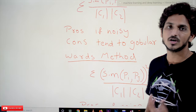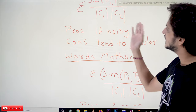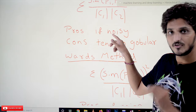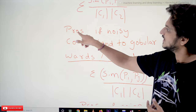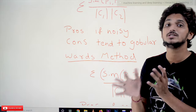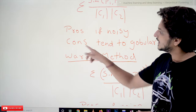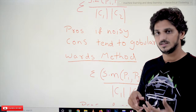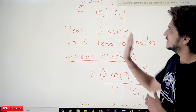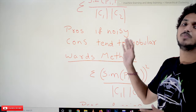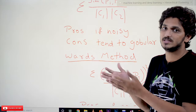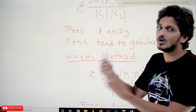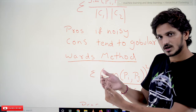The pros of group average linkage: it is good for noisy data points, the same way maximum linkage is. If you are having noise between the clusters it works well. The cons: it tends towards globular shapes, the same way maximum linkage does. However, group average is a trade-off between minimum and maximum — it is not as strongly tending toward globular shapes as maximum, and it handles noise better than minimum.